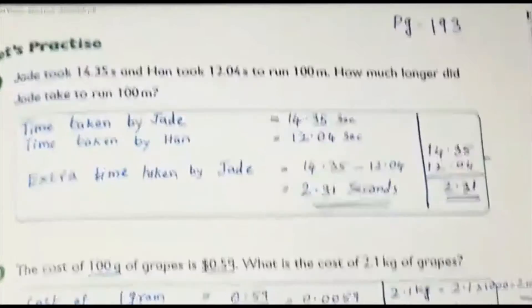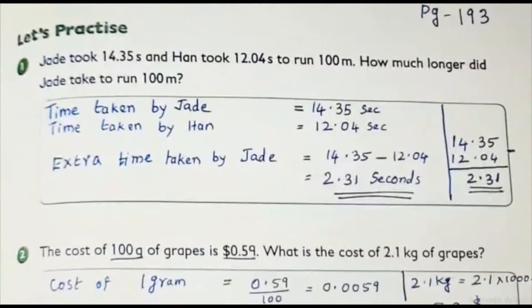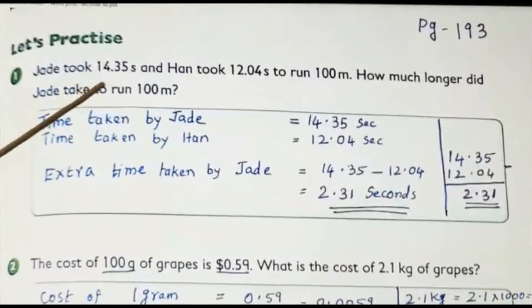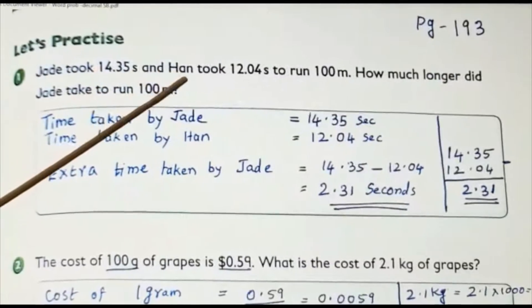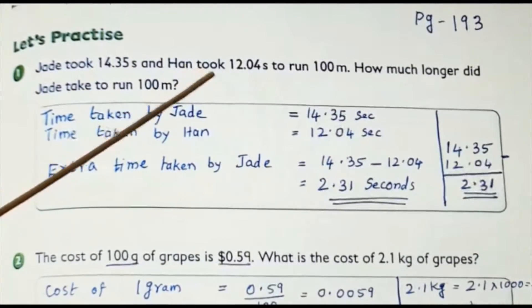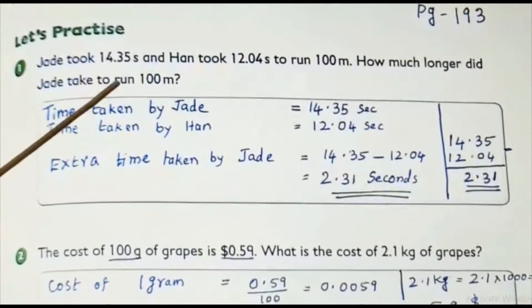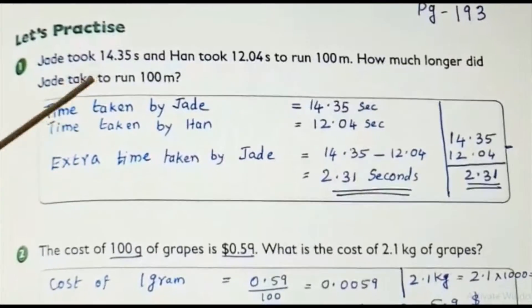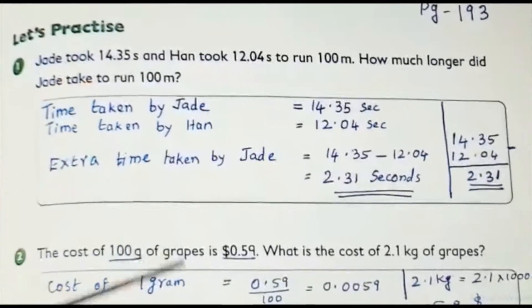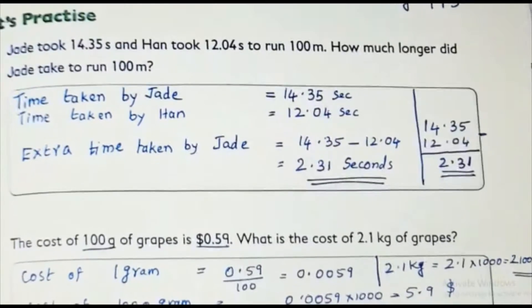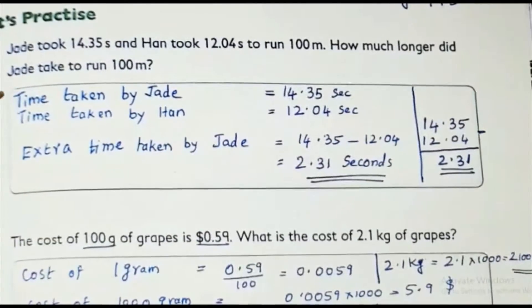Page 93, the next question, practice books, student book. Let's practice. Jade took 14.35 and 12.04. How much longer did Jade do? What steps, any steps you can write. I just wrote here three simple steps, anything you can write which is relevant to the question.